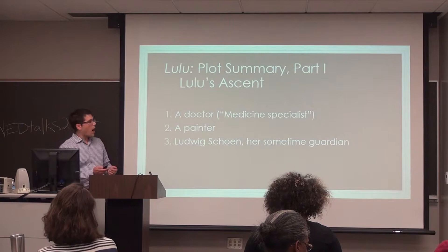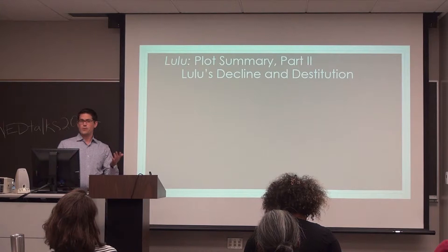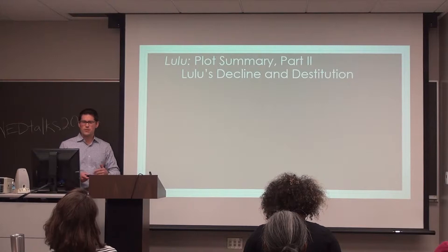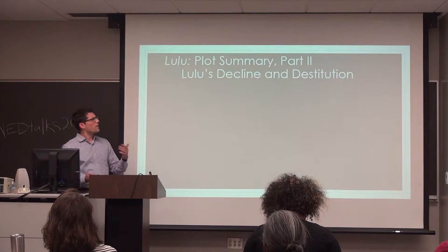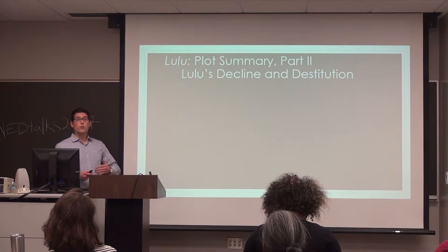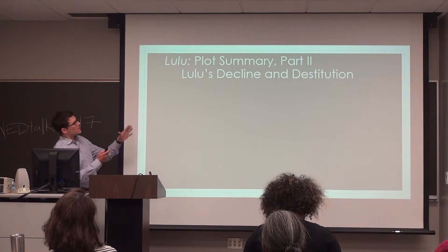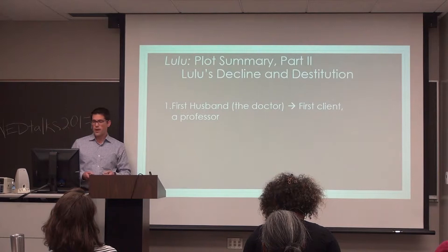Because she became a murderess, in part two she becomes a fugitive. She's in prison for a while, has an elaborate scheme to escape prison, gets out eventually, is in Paris for a while, and eventually ends up in London, surrounded by a small circle of admirers. She resorts to prostitution to make a living, to support her and her admirers. Adding a nice symmetry to the opera, she has three clients her first — and last — day as a prostitute.